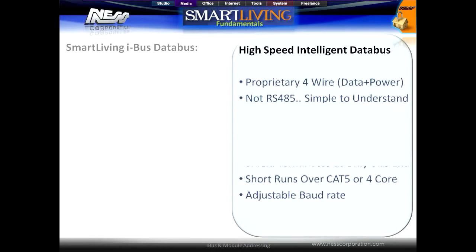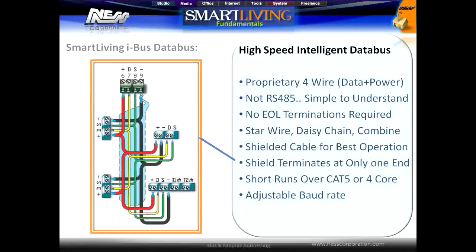The data bus is a four-wire proprietary data bus which is not based on RS-485. One of the benefits to this is there are no end-of-line terminations to worry about, and the system can be daisy chained, star wired, or a combination of any. Shielded data cable is recommended for best system performance, but the system will operate over short distances on four-core or Cat5 cable.